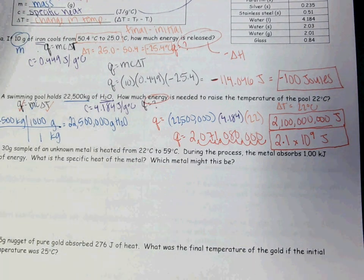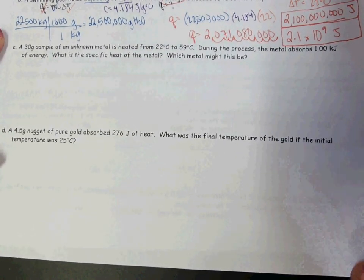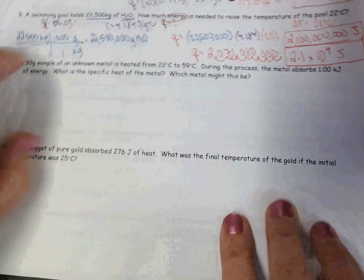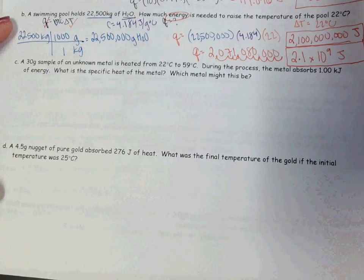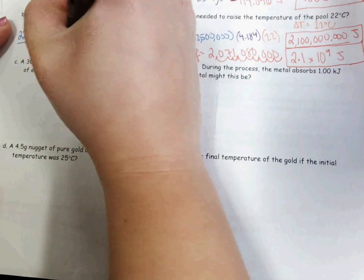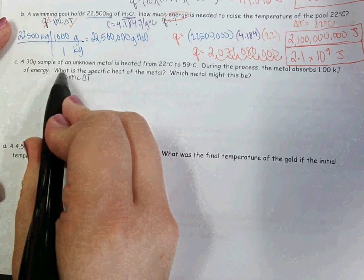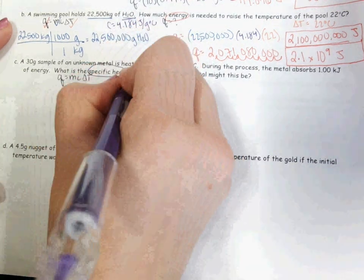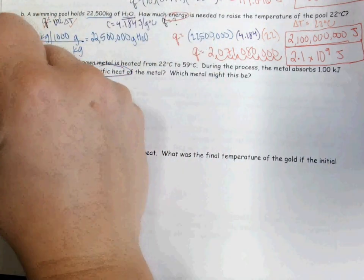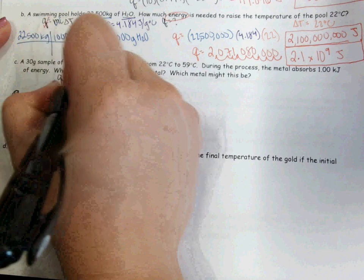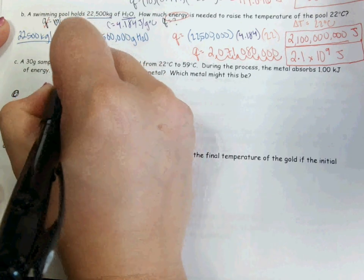Example C is worded in a little bit of a different way because we are not calculating heat or energy — we are calculating specific heat because we have an unknown metal. Because the substance is unknown, we are not able to use a specific heat chart to look this up. So my equation starts the same: Q equals MC delta T. However, because it's asking what is the specific heat, I'm solving for C, so I'm going to rearrange my equation to solve for C. To get C by itself, I divide by M and divide by delta T.